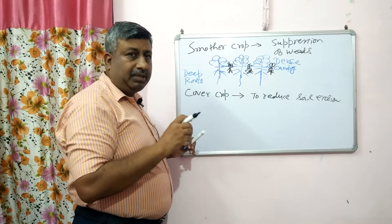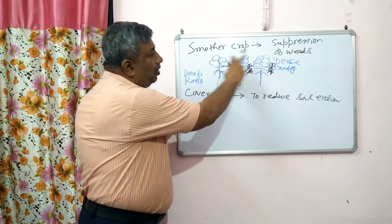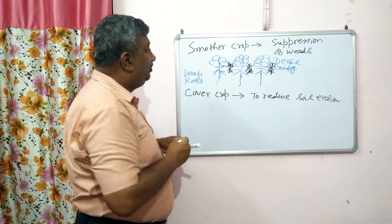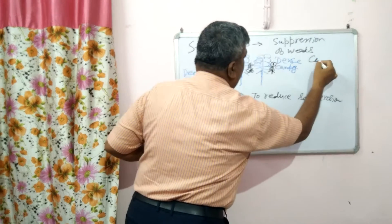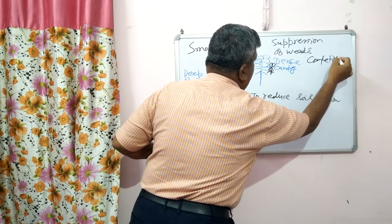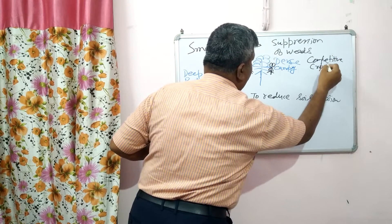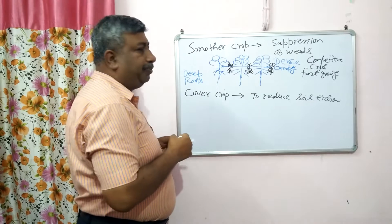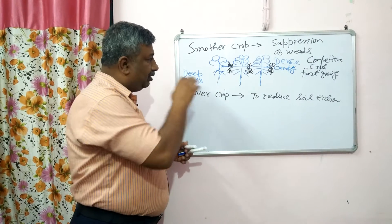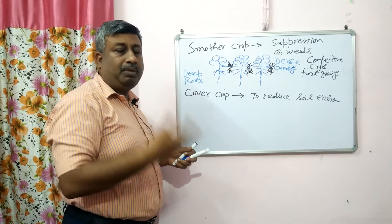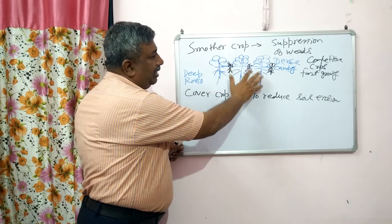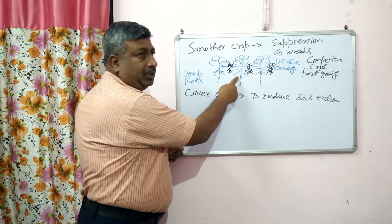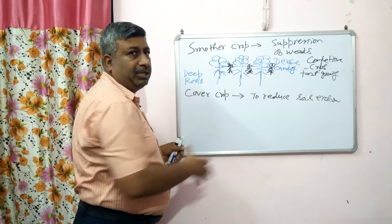Smother crops reduce weed germination and reduce weed growth, so overall weed presence in that area is less. These crops are very competitive — we can say smother crops are competitive crops, competitive against weeds. They are fast-growing crops which have dense canopy and deep roots. Weeds become weak because they compete with the smother crop, which is more competitive, giving it more uptake of nutrients like nitrogen, phosphorus, and zinc.